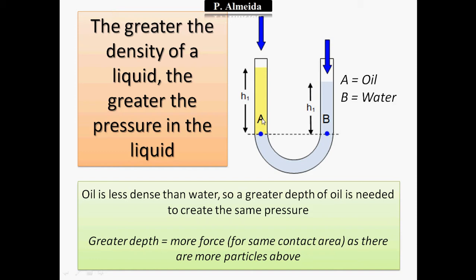I need more oil on top of A to get the same pressure in A and B. The greater the density of a liquid, the greater the pressure in the liquid. B, water, is denser than A, oil, and therefore because it's denser it applies more pressure.